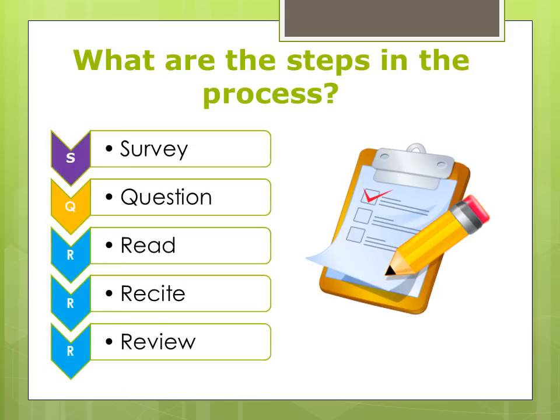There are five steps in the SQ3R method. They are survey, question, read, recite, and review. We will spend a few moments looking at each step of the process in detail.